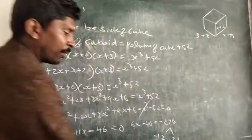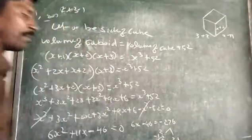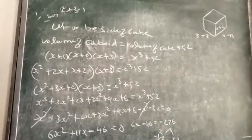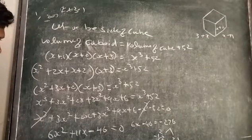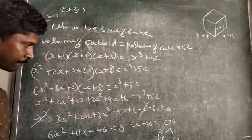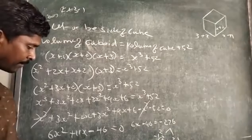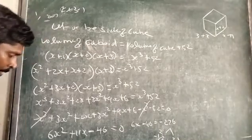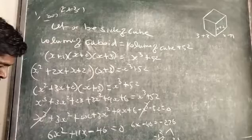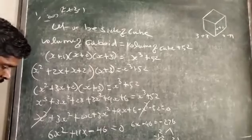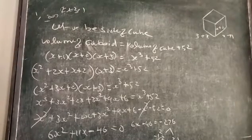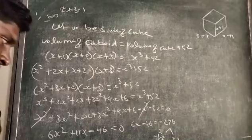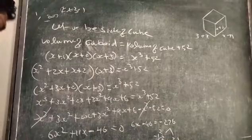We rewrite and factor: dividing through by 6, we get (x - 2) as one factor. Setting x minus 2 equal to 0 gives x equal to 2.